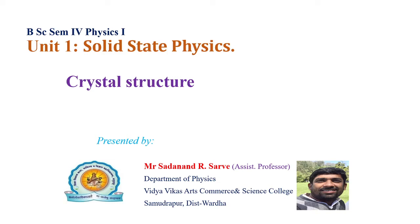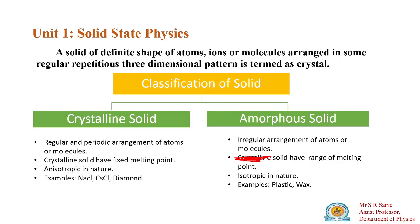Good afternoon students. Today we are going to learn about crystal structure. In the previous video lecture we learned about crystal classification of solids — what is crystalline solid and what is amorphous solid. Amorphous solids do not have a regular arrangement of atoms and molecules, but in crystalline solids, atoms and ions are arranged in a regular and periodic manner.